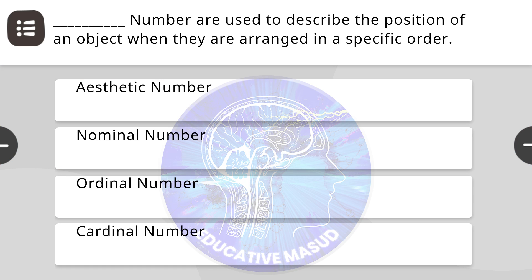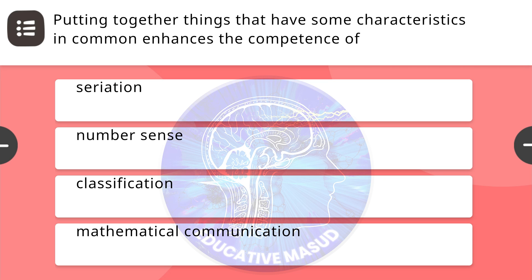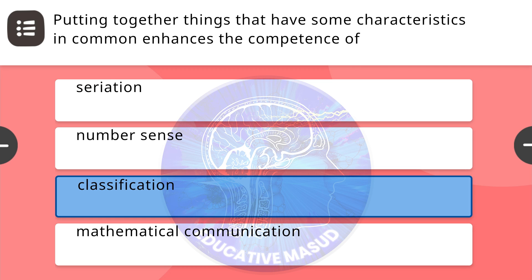Next question: blank numbers are used to describe the position of an object when they are arranged in a specific order. Correct answer is ordinal numbers. Next question: putting together things that have some characteristics in common enhances the competence of? Correct answer is classification.